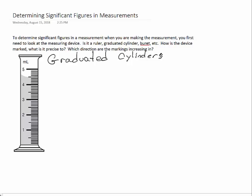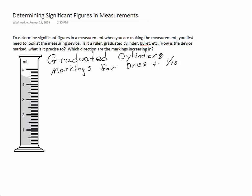When we look at the graduated cylinder here, we see that it has markings for the ones place — one, two, three, four, five — but the smallest place it's marked to is actually the tenths place, because there are markings in between the one, two, three, four, and five that correspond to the tenths.